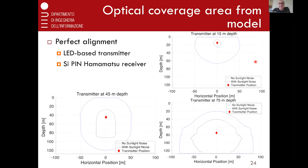You can also look at the coverage areas, with the transmitter at the center of each graph and two contours — one in black with sunlight noise, which is much more restricted because of the high noise level, and one in blue without sunlight, giving a much larger coverage area. As you move towards the bottom and away from the surface, the effect of light becomes smaller, so the two contours are less differentiated and are bigger.